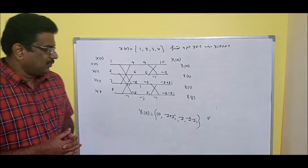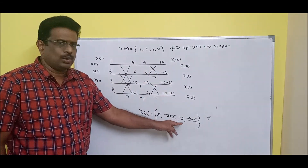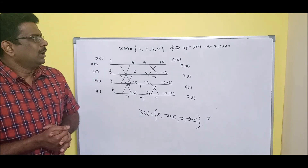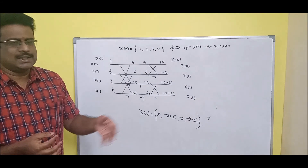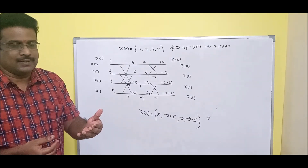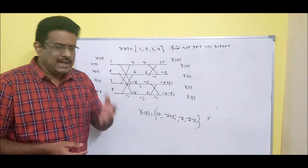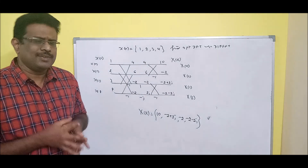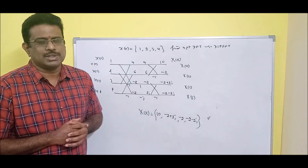You can verify this by checking: add all, then alternate locations, then conjugate — even for the previous 8-point problem. With this I would like to conclude the DIF FFT topic. The next session I will do IDFT — where the frequency domain goes to the time domain — using both DIT and DIF methods. We will do it directly without derivation. Thank you.